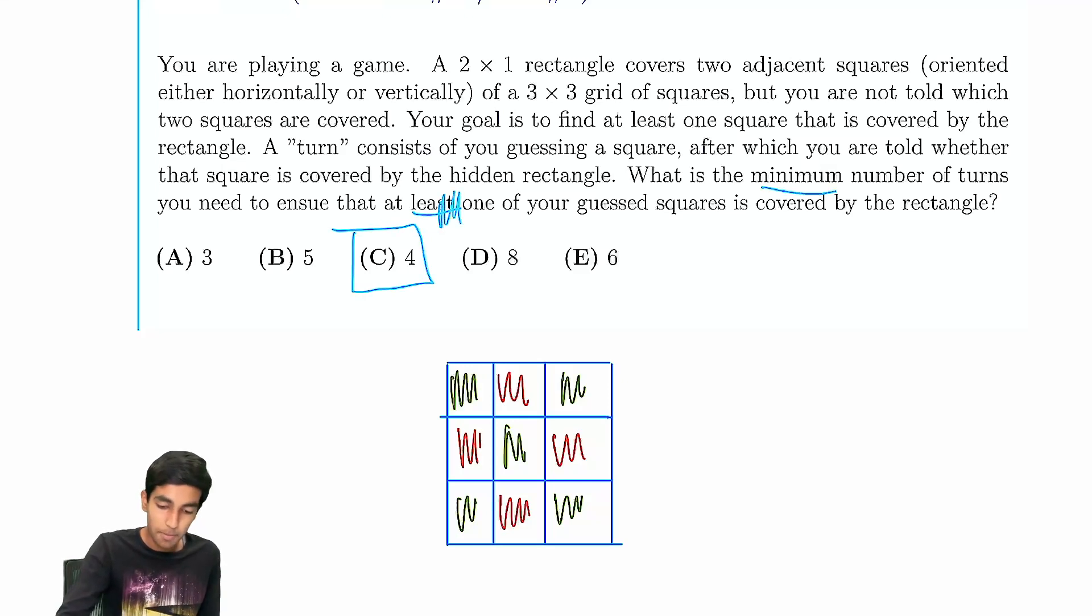That's the minimum. So the key trick here was this coloring argument, and the fact that every single domino is always one green and one red. Then we can just guess all of these red squares. Hope you enjoyed!